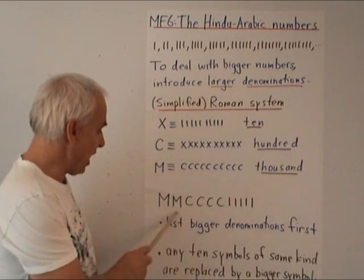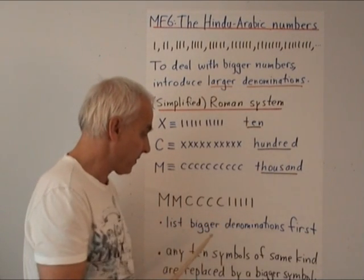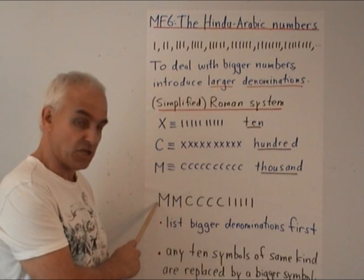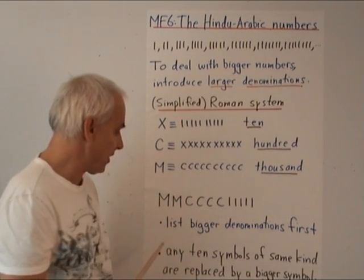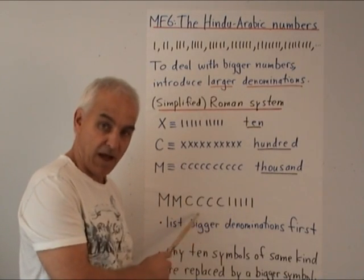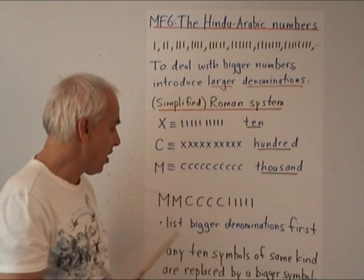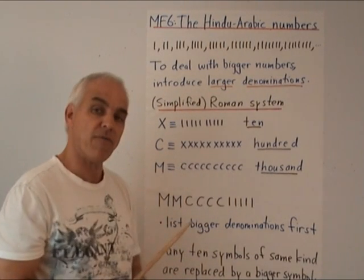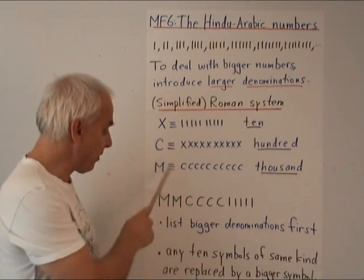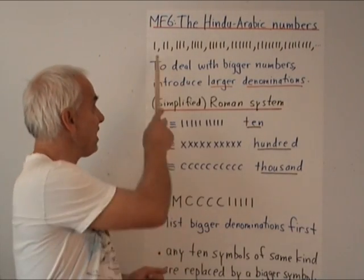We can write a number like two M's, four C's, and five ones — that would be two thousand four hundred and five. In this case there are no tens in that number. We agree to list the bigger denominations first: thousands, hundreds, tens, then ones. Any ten symbols of the same kind are replaced by the next bigger symbol, so we're not allowed to have ten or more C's in a row — we replace ten C's with an M. The maximum number of same symbols in a row is nine. This simplified Roman numeral system was in use for thousands of years and serves as a very good shortcut for working with natural numbers.